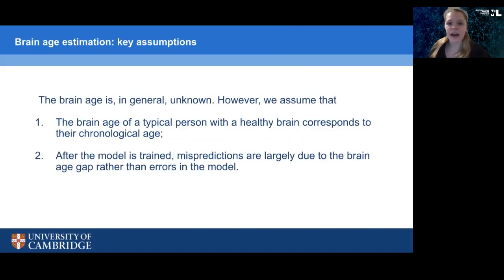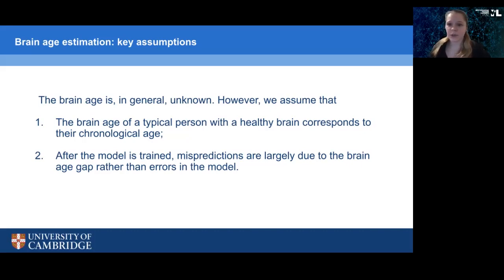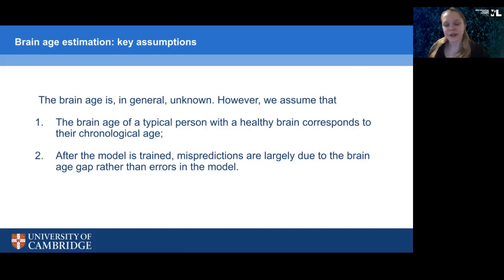Brain age is in general unknown because we have no way to determine how old a 20-year-old or 70-year-old brain should look — there are no rules for that. But we can make two assumptions that help us compute those values. First, we assume that a typical person with a healthy brain and no obvious brain diseases would have brain aging that follows a similar pattern to chronological aging, so brain age and chronological age would match for a healthy person. Second, we assume that after the model is trained, any errors it makes come from a brain age gap rather than model error. For example, if we have a 50-year-old patient and the model says the brain looks like it's 70, we assume there's a 20-year brain age gap.